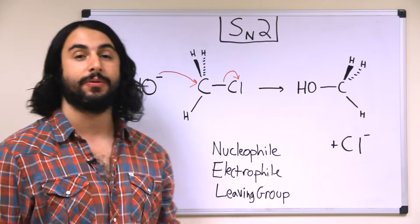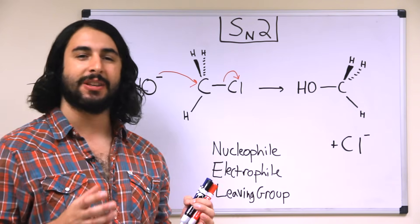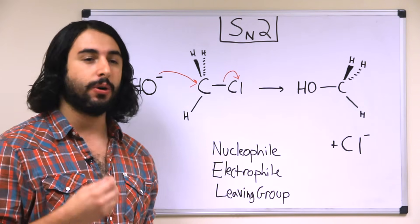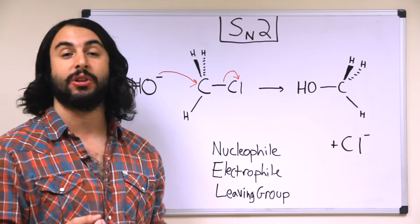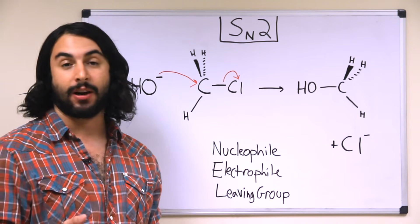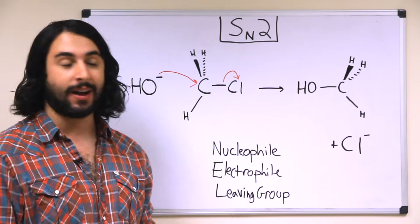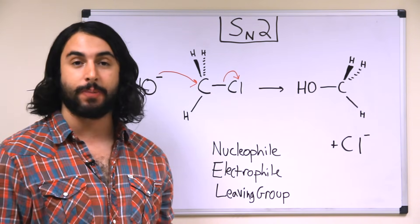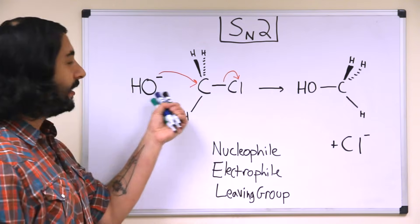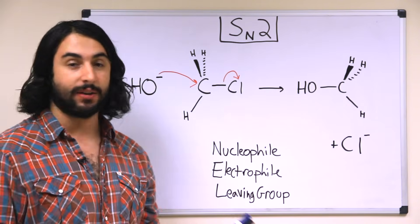So the first is the nucleophile. The nucleophile is something that has excess electron density. So this could be a formally negatively charged atom or polyatomic ion, or it could be something with a lone pair. Basically, anything with excess electron density, like a hydroxide ion, that's got a formal negative charge.